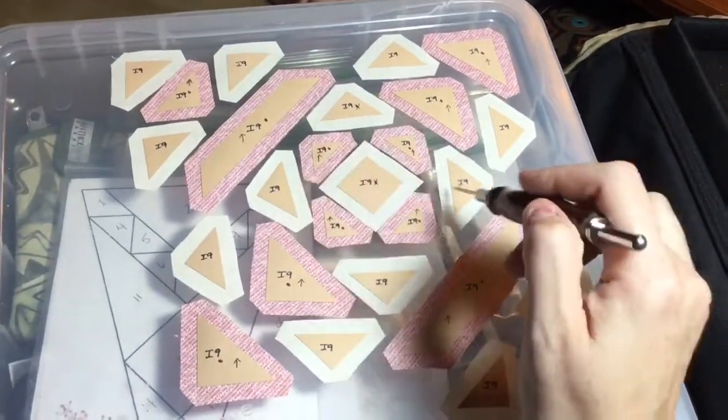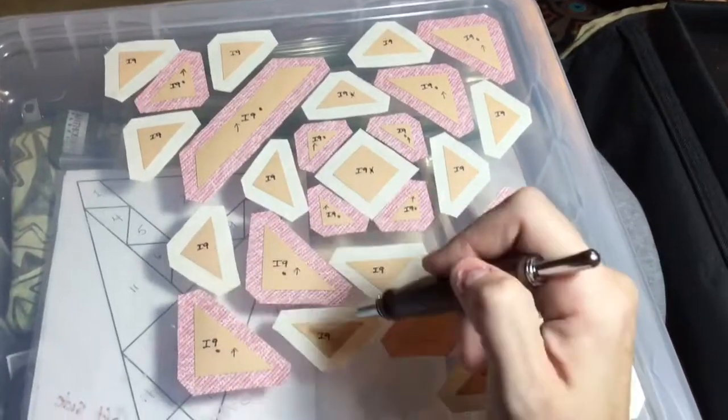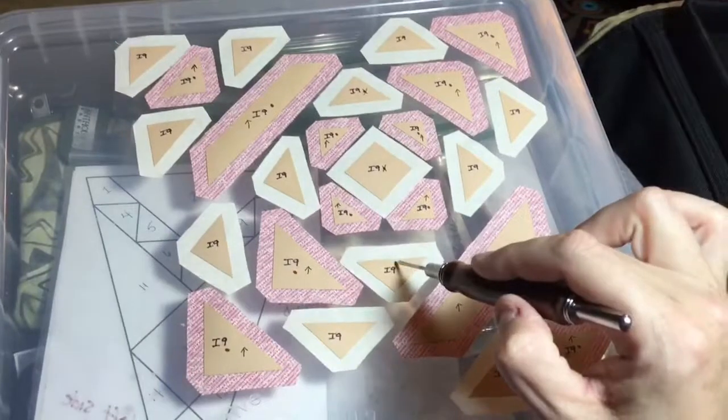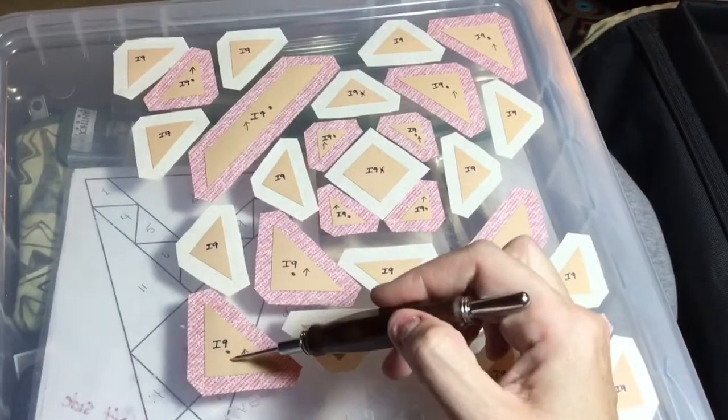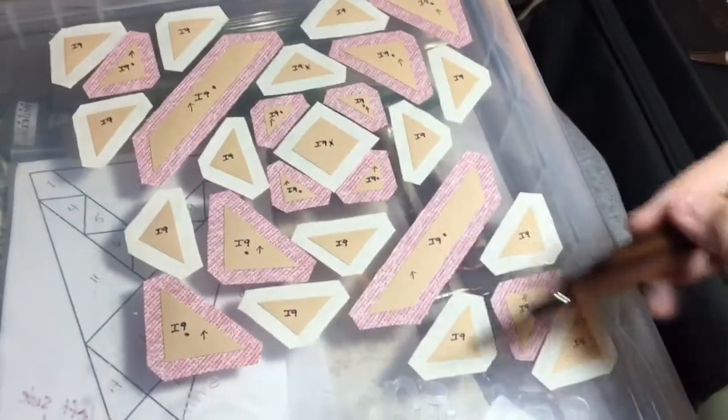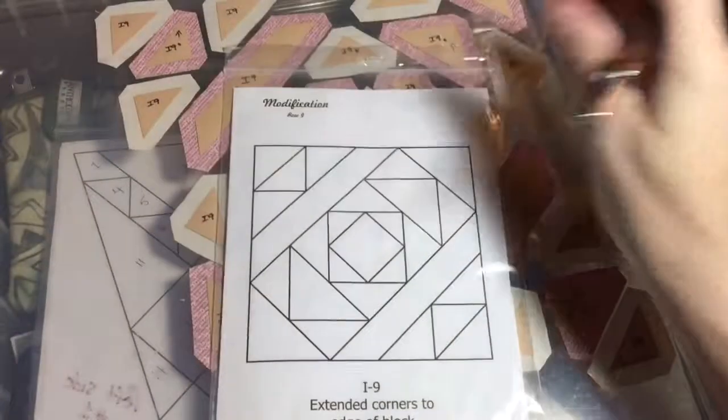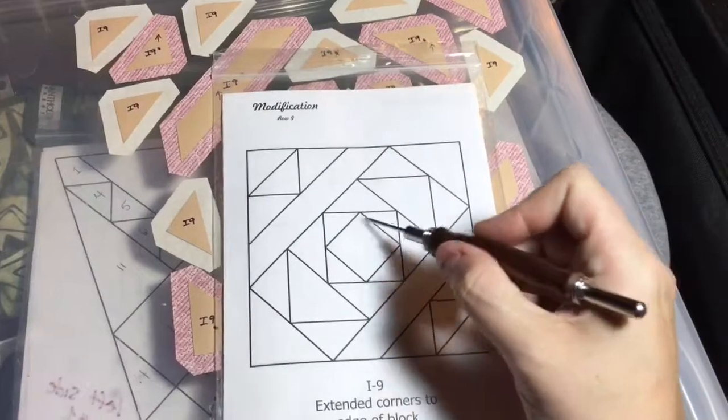This section attaches to these, and then this section, and then these. So right here is square, and a square, and a square, and then a flying geese unit with a triangle at the end. We'll be able to break this down piece by piece, and this is the first unit here.